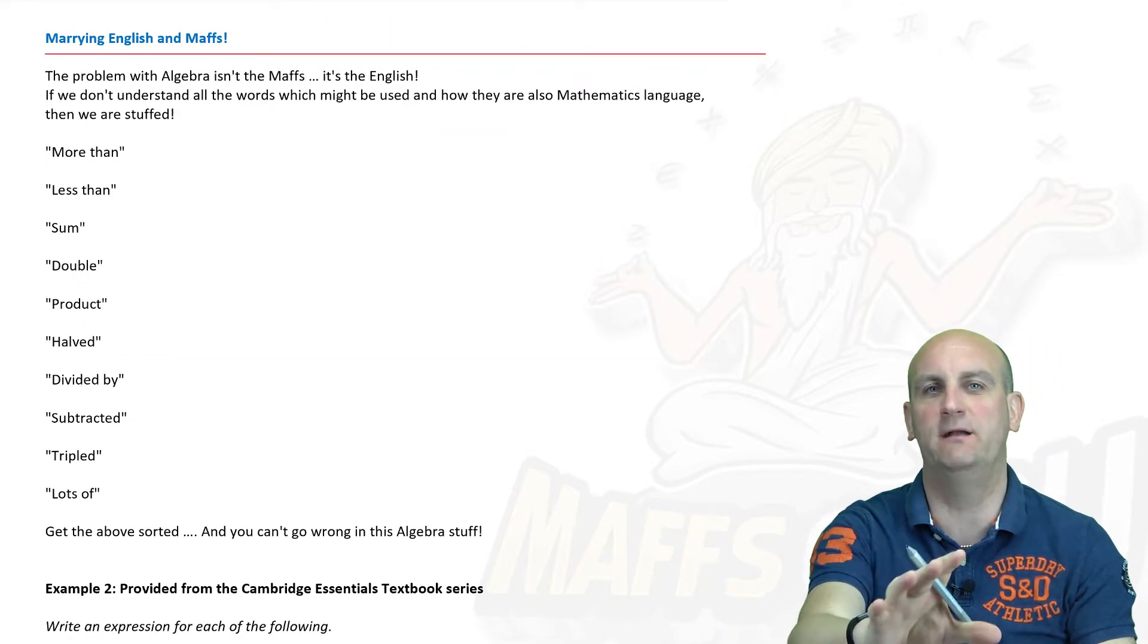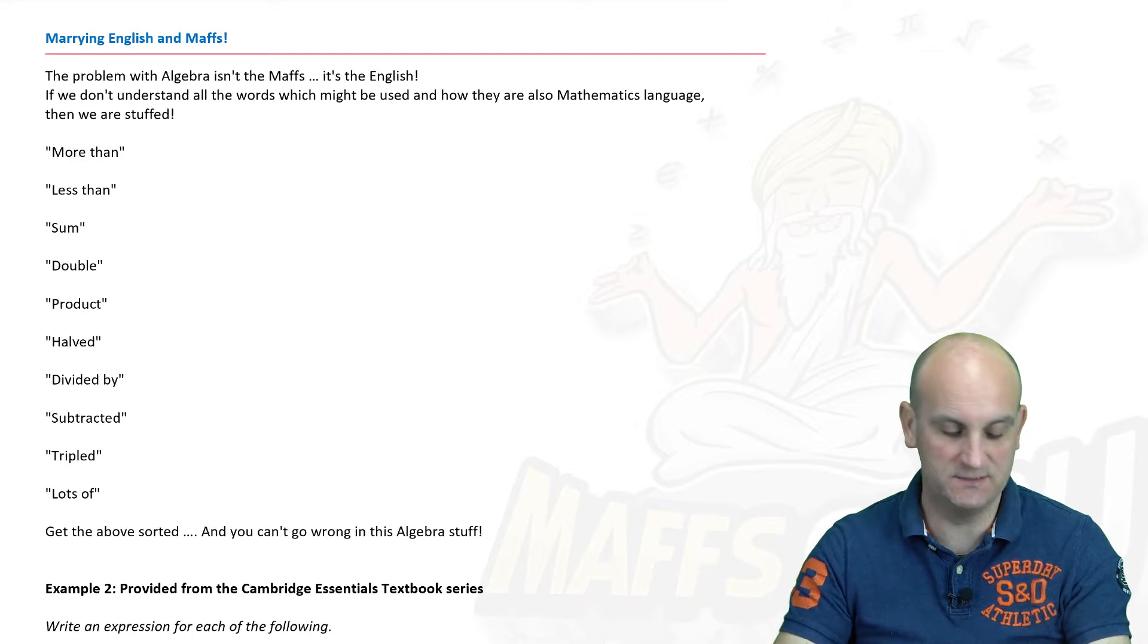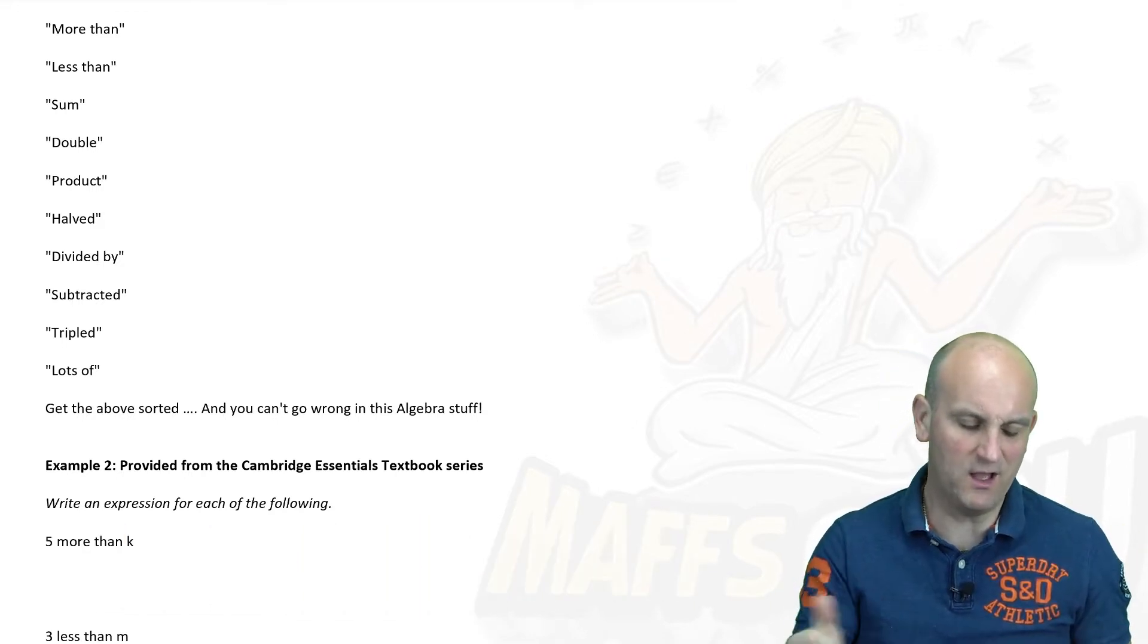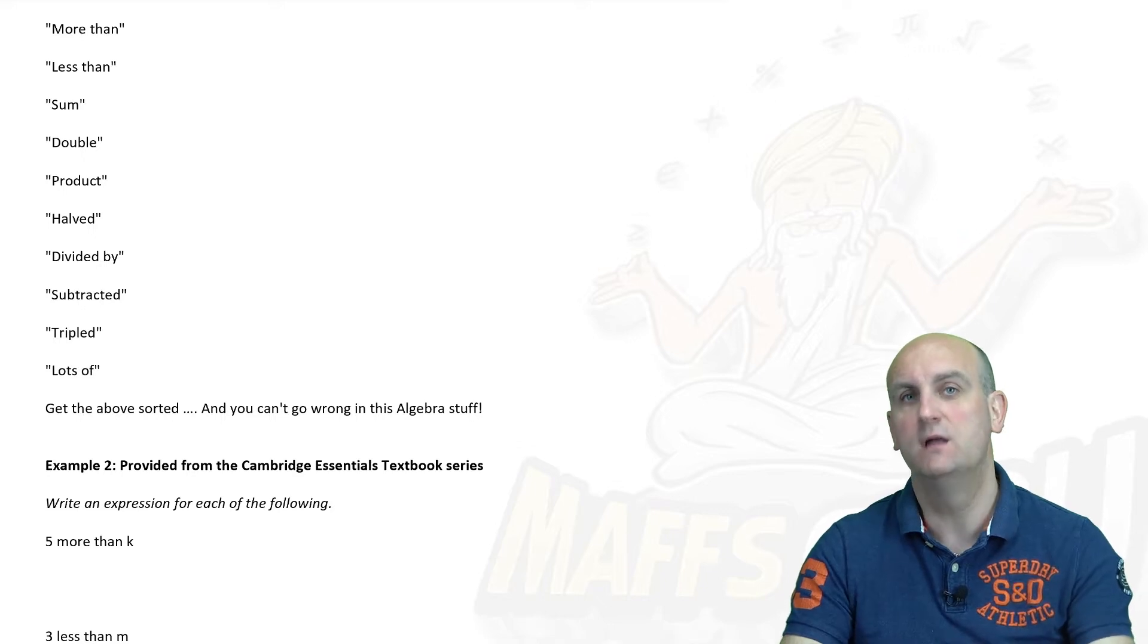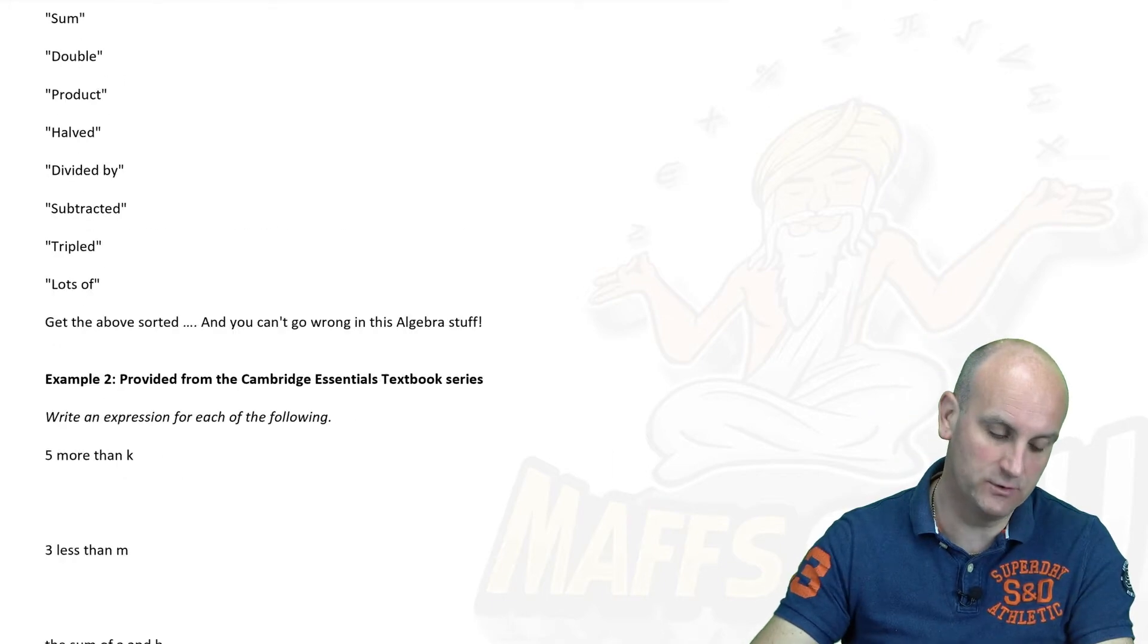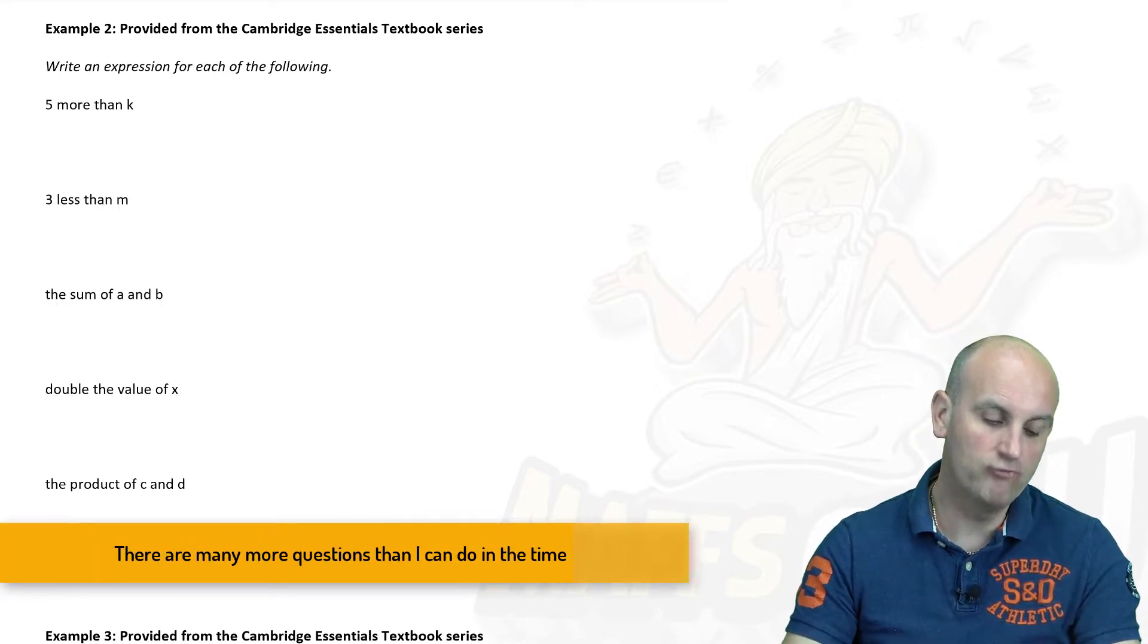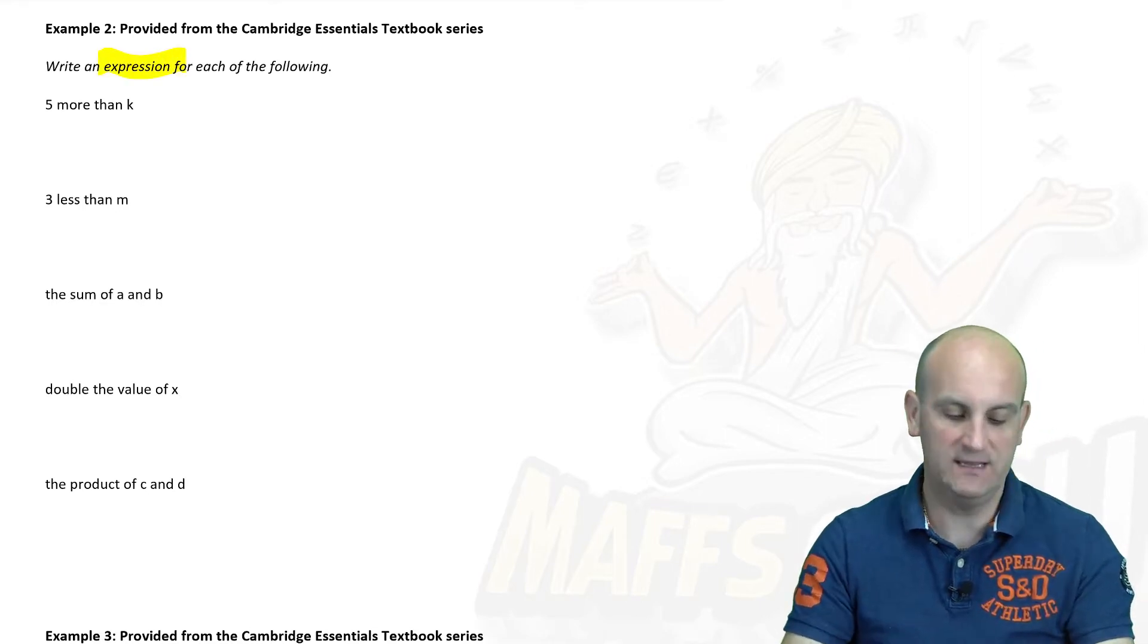Marrying maths and English together. It is really important that we understand the language that is being used. And there are so many words here that we use in mathematics to sadly try and trick you. More than, less than, sum, double, product, halved, divided by, subtracted, tripled, lots of. This whole section is about using that language to build algebraic expressions. And the order of the language is seriously important. These are the type of questions that probably cause people the most heartache and difficulty. Write an expression for each of the following. An expression, we know that. For each of the following.